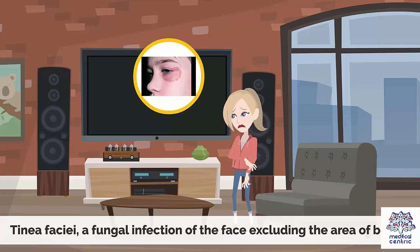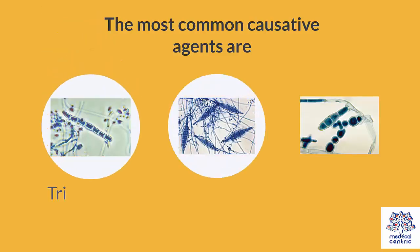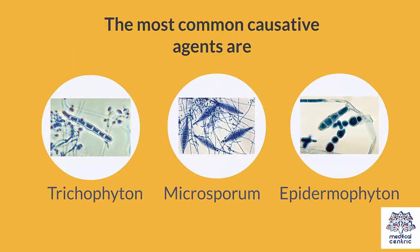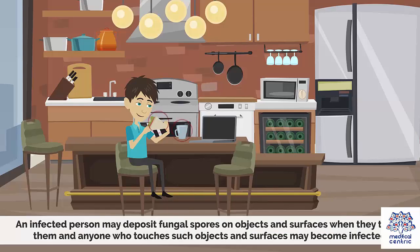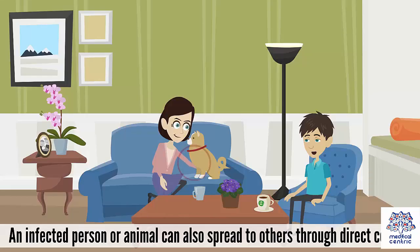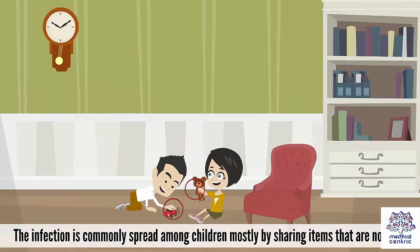The most common causative agents are Trichophyton, Microsporum, and Epidermophyton. These fungi are microscopic spores that may live on the soil for an extended period, where humans and animals — especially pet cats and dogs — can be infected after direct contact with this soil. An infected person may deposit fungal spores on objects and surfaces when they touch them, and anyone who touches such objects and surfaces may become infected. An infected person or animal can also spread the infection to others through direct contact. The infection is commonly spread among children, mostly by sharing items that are not clean.